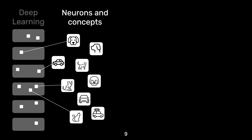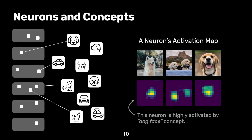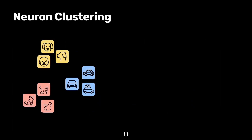A common approach to interpret how a model operates internally is to study features detected by the model. A growing number of techniques aim to interpret such features at the neuron level, because neurons are highly activated by specific features in an input, meaning that neurons can act as a detector of a specific concept. For example, this neuron on the right detects the dog-face concept. Based on the concepts, NeuroCartography clusters neurons so that neurons of similar concepts can be grouped together.